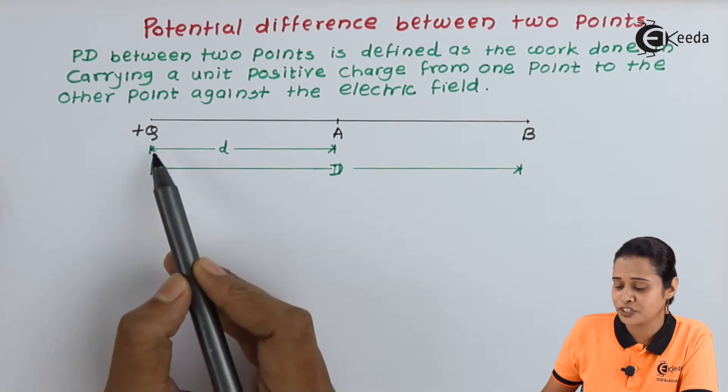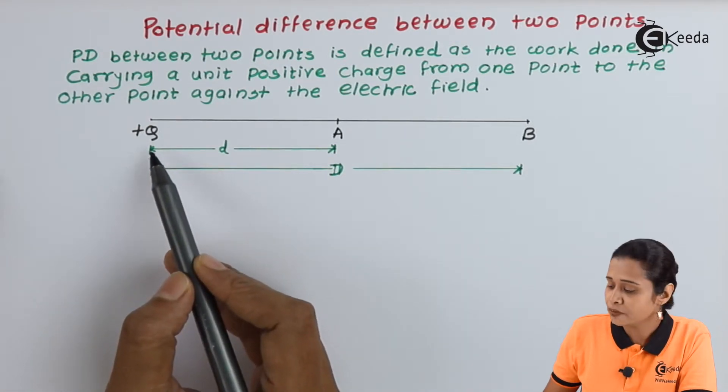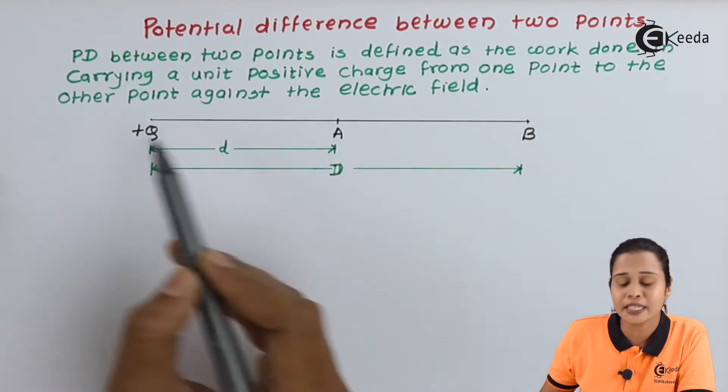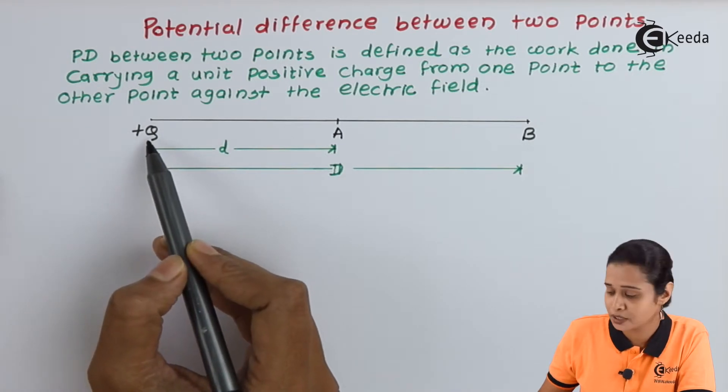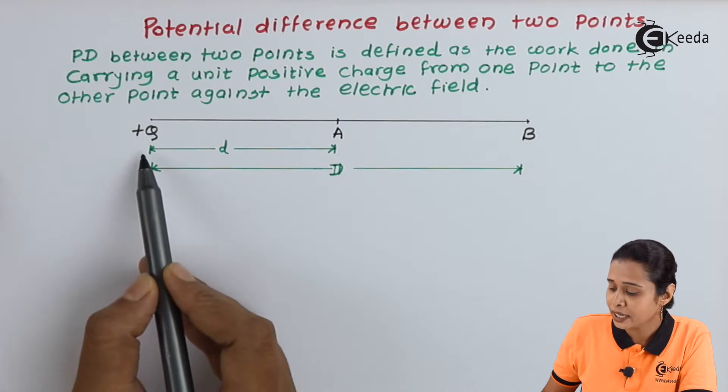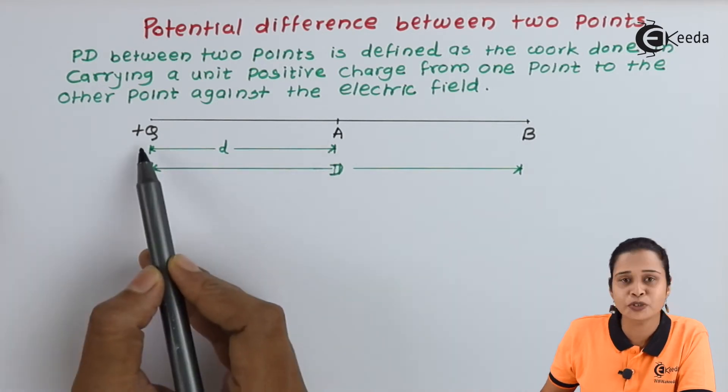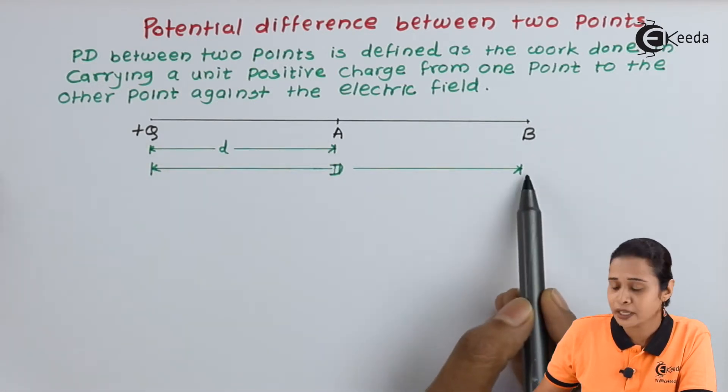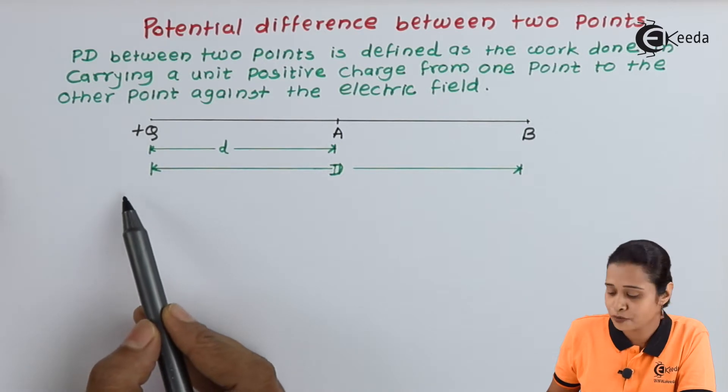Now here we have a point charge that is Q. Here we are keeping two points in this electric field of charge Q, that is point A and point B. Point A is at distance d from charge Q and point B is at distance capital D from charge Q.